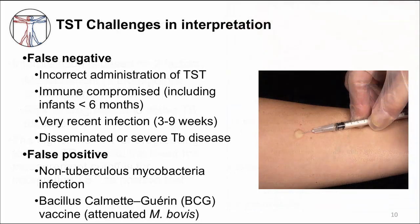There are many challenges to interpreting the TST. False negative results can occur. One possibility is from incorrectly placing the TST. Since this test measures the memory T cell response, people who don't have a normal immune system can have a false negative result. If you do this test early in TB infection before the latent period, the test may be falsely negative because the T cell response to MTB has not yet developed. Finally, false negatives can also occur in very severe or disseminated TB disease. False positives can also occur because of cross-reactivity of the TB antigens used in TST to other mycobacteria, including non-tuberculosis mycobacteria and even the mycobacteria strain used as a vaccine called BCG.